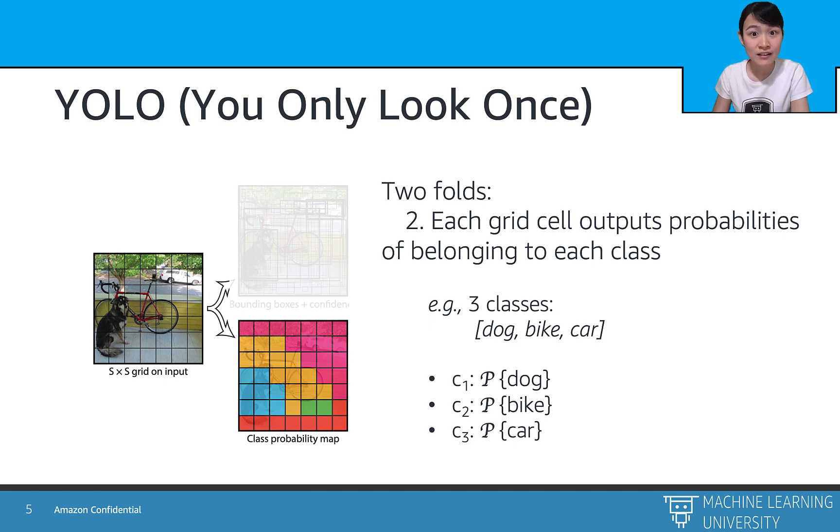if we have three classes: dog, bike, and car here, then YOLO will output probabilities of the cell, if the cell is from the dog or bike or car.